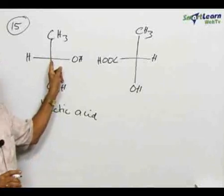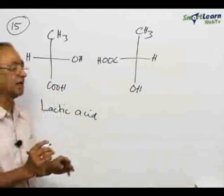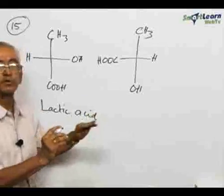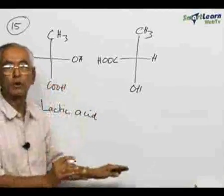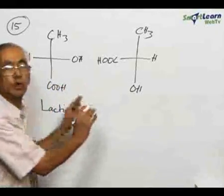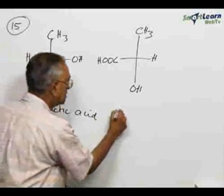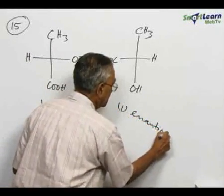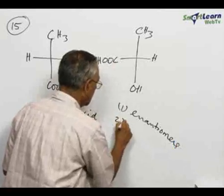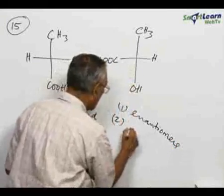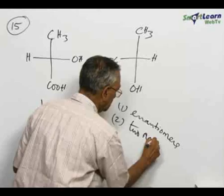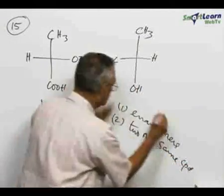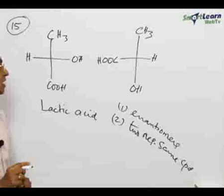Lactic acid, because of its chiral center, can exhibit optical activity. There are two possibilities: the two structures represent two different representations of the same compound, or they are enantiomers. Which of the two is correct is our question.